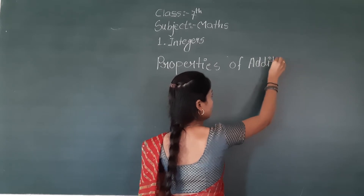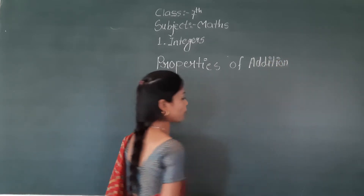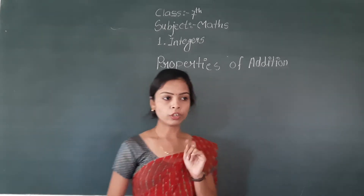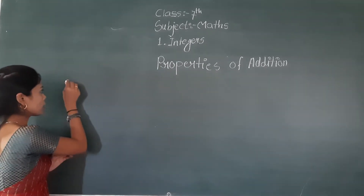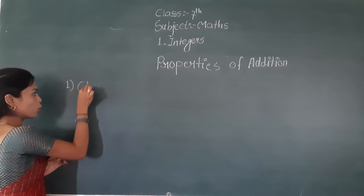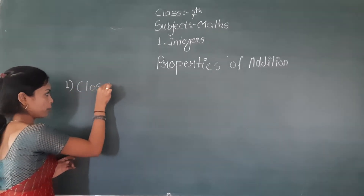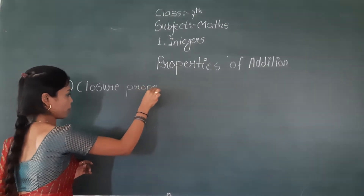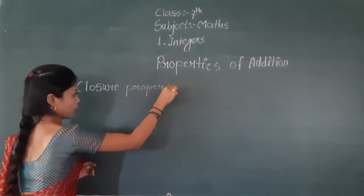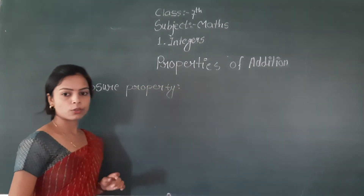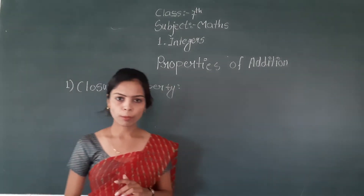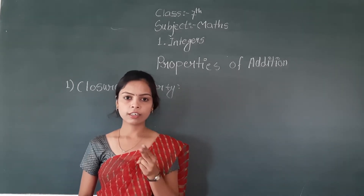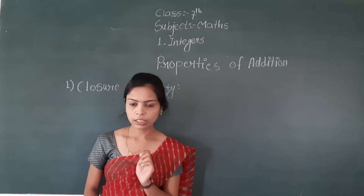In which we studied the first property. What is the first property of addition? The first property of addition is the closure property. What is the closure property? The closure property is: when you add two integers, the result is also an integer.